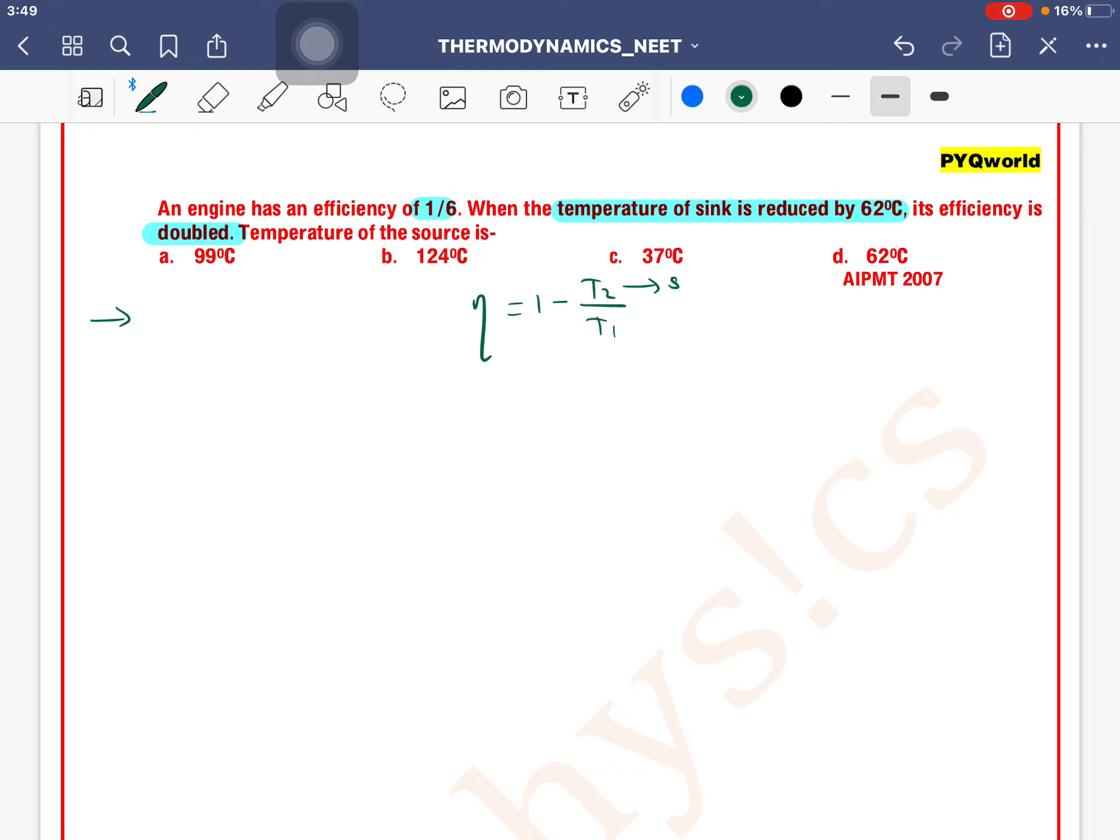The efficiency of an engine is η = 1 - T2/T1, where T2 is the temperature of sink and T1 is the temperature of source. So in the first case, efficiency is 1/6 = 1 - T2/T1.